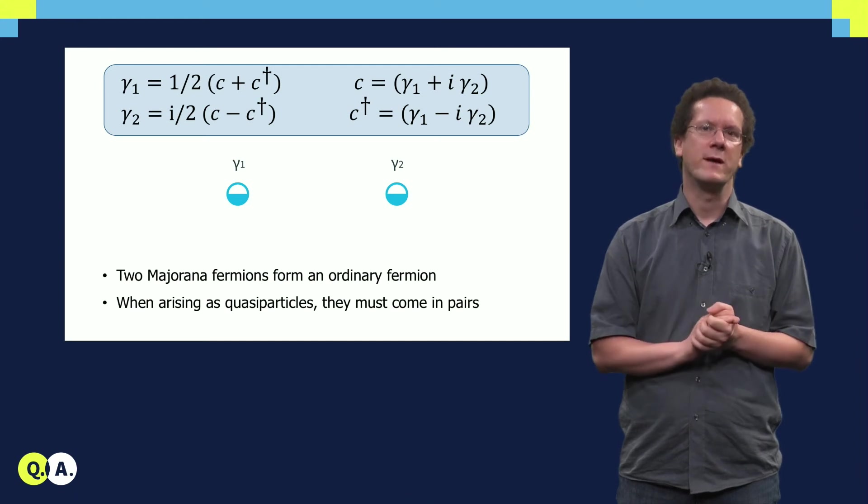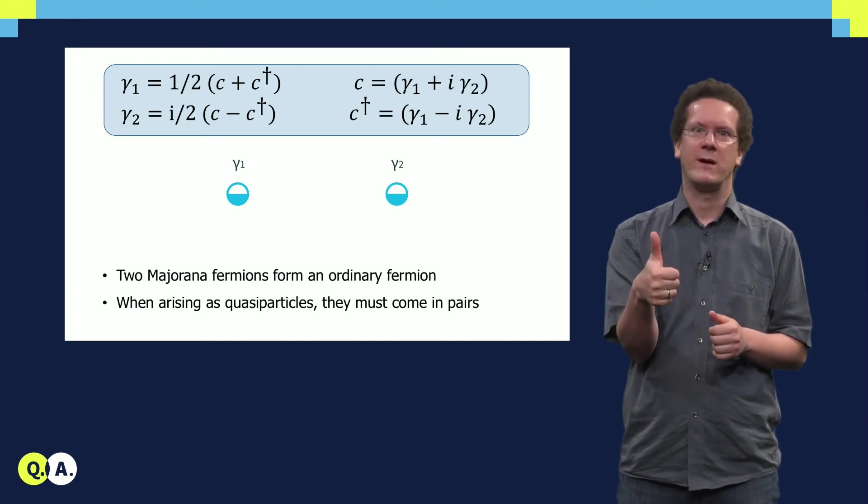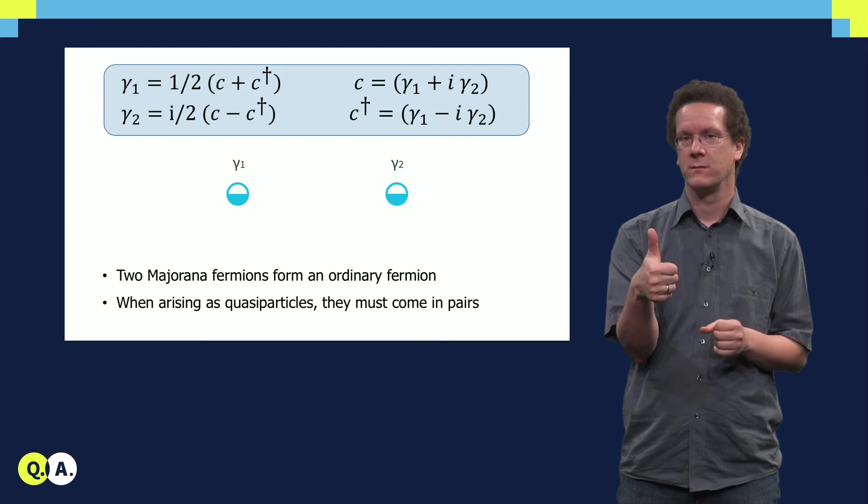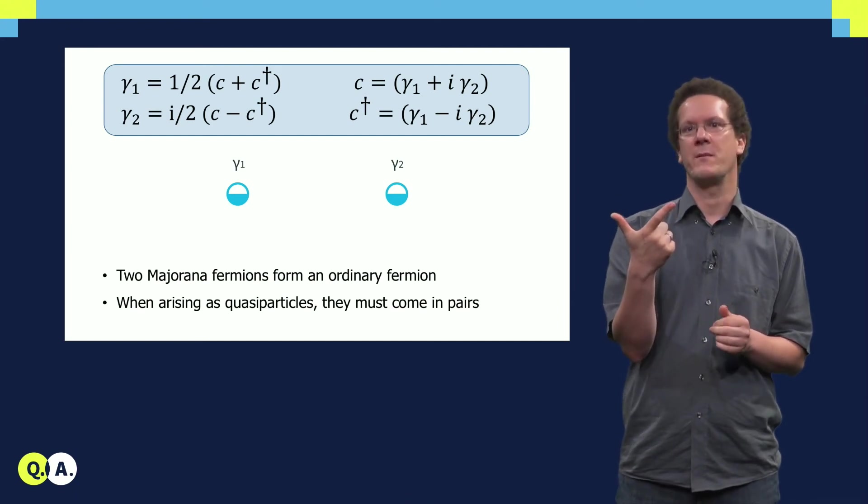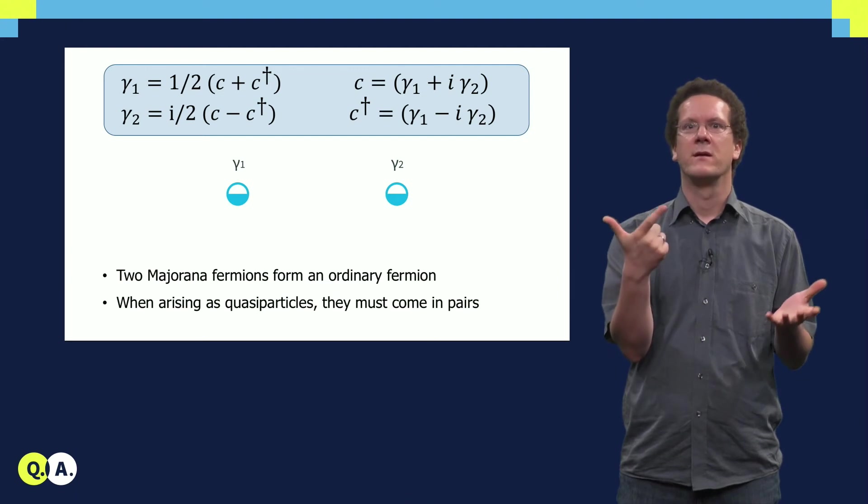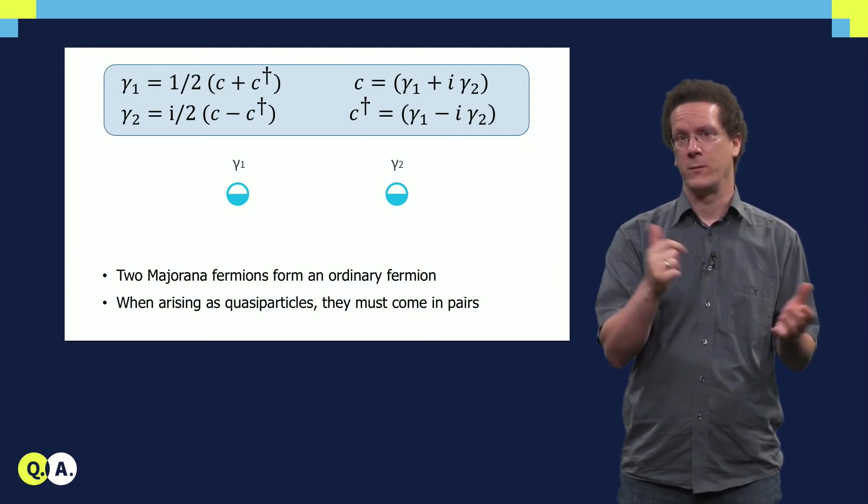We can summarize at this point: first, two Majoranas form one fermionic state. And second, as quasi-particles in condensed matter systems, they always come in pairs. In condensed matter, the building blocks are always ordinary fermions.